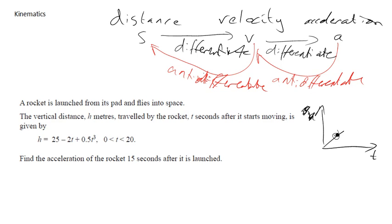So there you go. I've got a rocket launched from a pad and flies into space. It's vertical distance—oh, they try to be clever, not called it S, they called it H. Traveled by the rocket T seconds after it starts moving is this. Awesome. Find the acceleration of the rocket 15 seconds after it's launched. So that told me the time, and it's between 0 and 20, so that's all good.